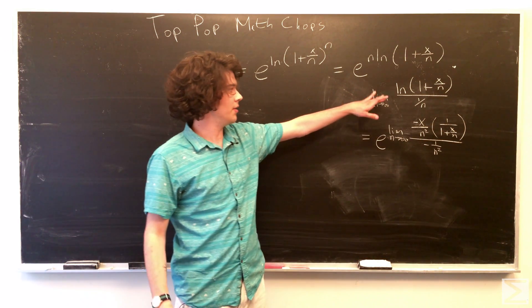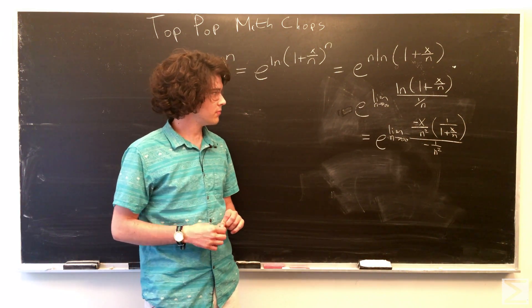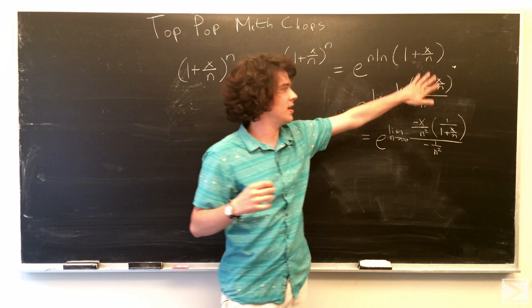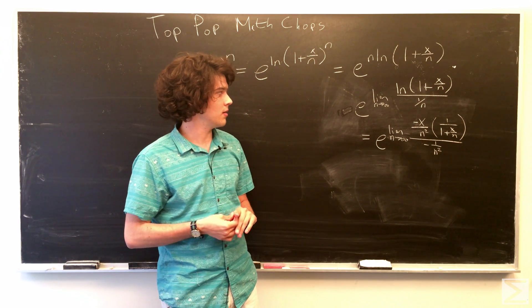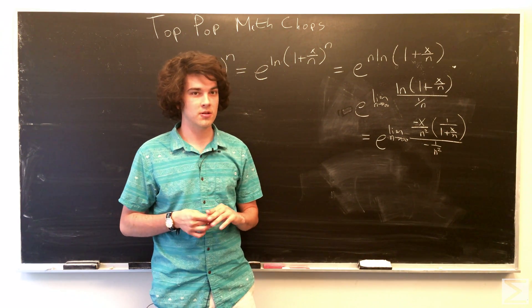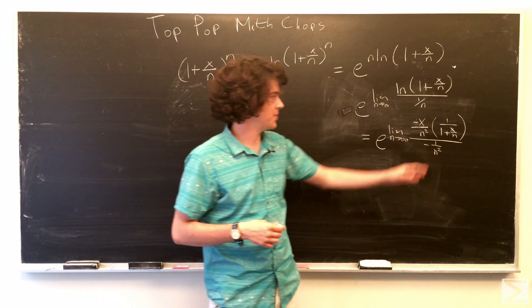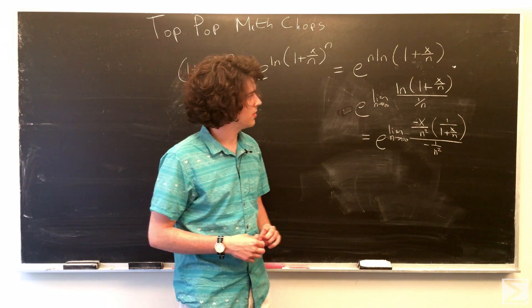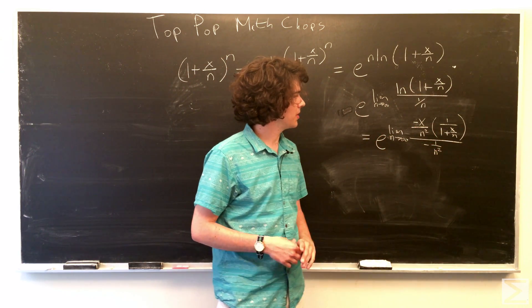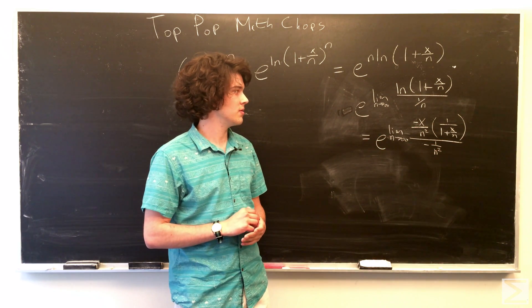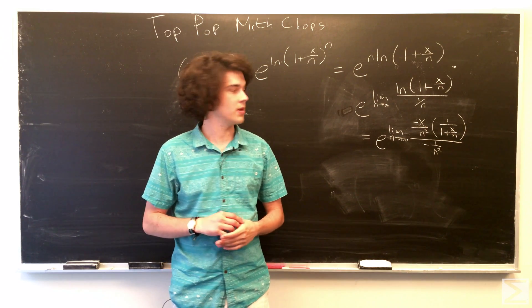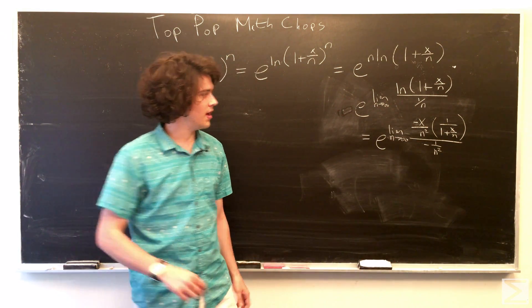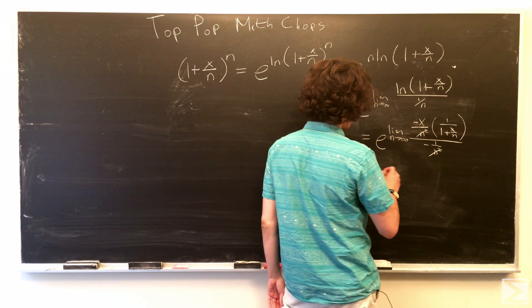And, in our numerator, we have a chain rule going on, where we have a ln of x, and x itself is a function. So, first we take the derivative of natural log, which is just 1 over x, except x, of course, is our inner function there. And then we take the derivative of the inner function, which 1 is going to become 0, and x over n is going to be negative x over n squared by the power rule. And, similarly, on the bottom is the power rule. And these two negative n squareds cancel out.